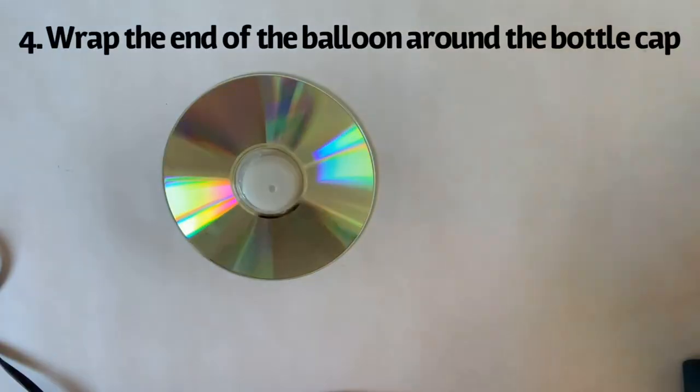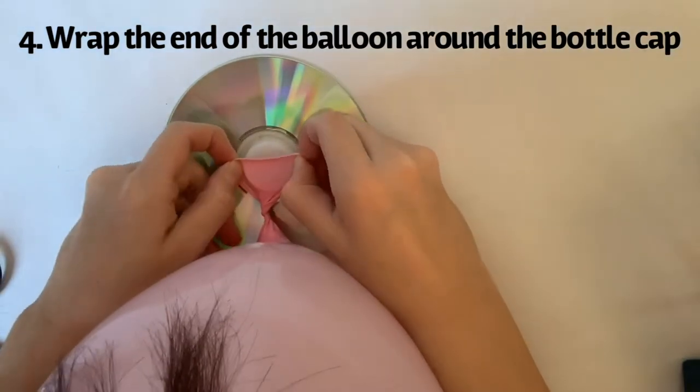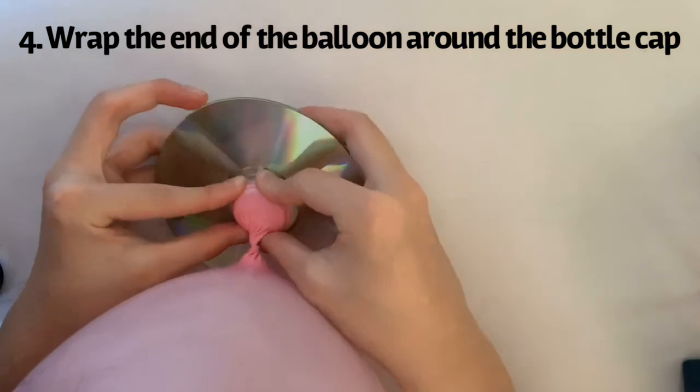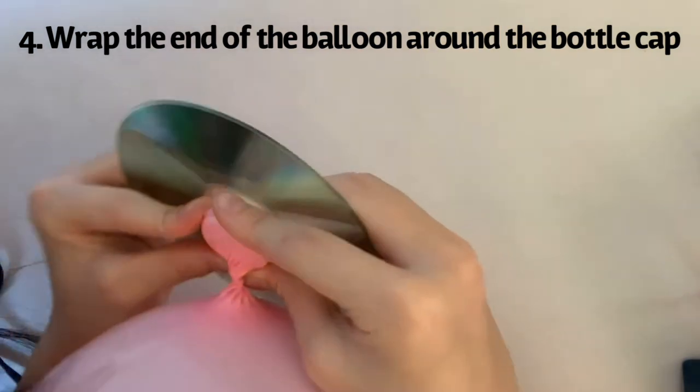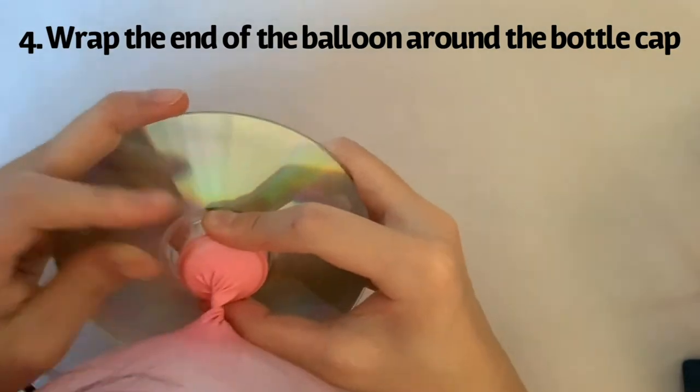Then, you're going to wrap the end of the balloon around your bottle cap. This may take a few tries because the balloon does sometimes slip, but after you're done, it should look something like this. You might want to hold the balloon where it wraps around the bottle cap or where it twists so no air releases involuntarily.